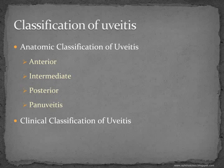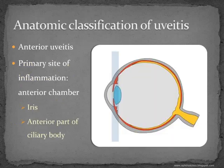Now the classification of uveitis. Anatomically, it is classified simply as anterior, intermediate, posterior, and pan-uveitis. But this does not tell us about the causes of uveitis, and for this we have a clinical classification. The anatomical classification tells us the predominant site of inflammation of the uvea. First, anterior uveitis.